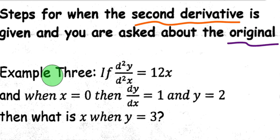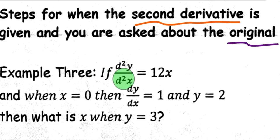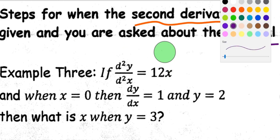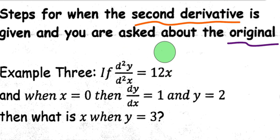Let's go ahead and read this question. Example 3 says if d squared y dx squared — the notation is a little off — but basically it's the second derivative equals 12x. Right off the bat, I'm just going to underline that in orange. We'll keep the second derivative in orange, so we are given the second derivative is 12x.